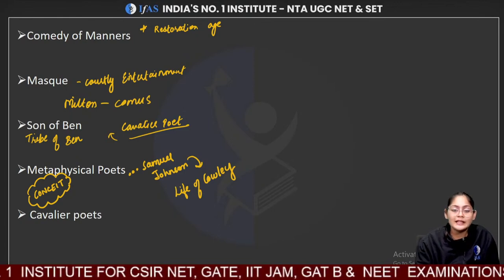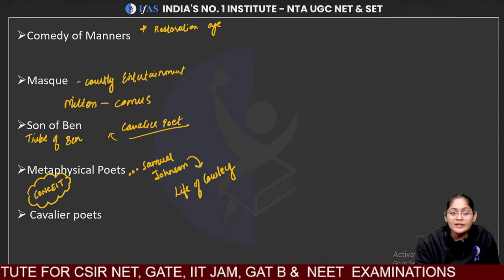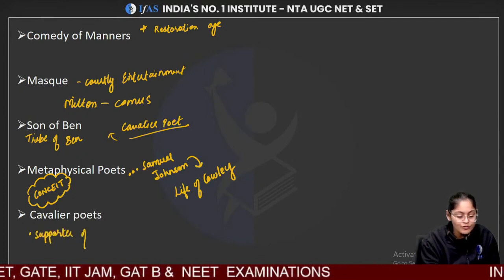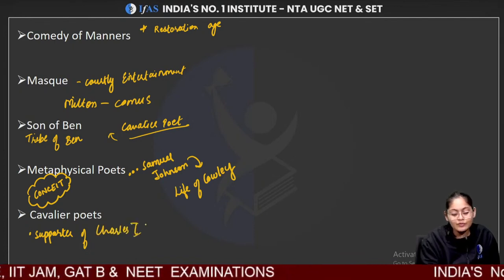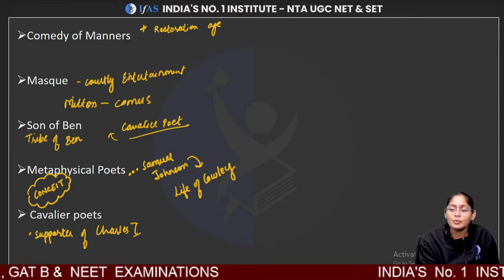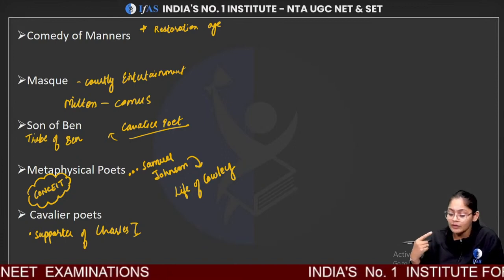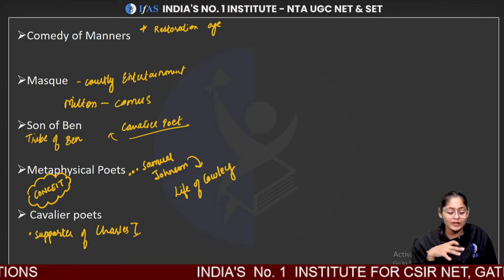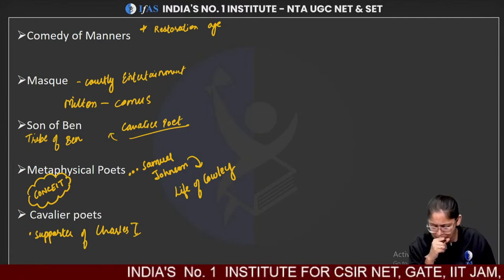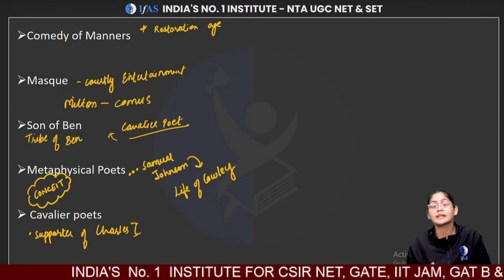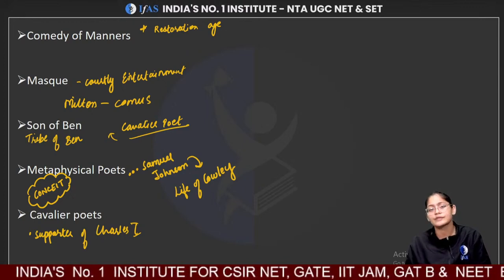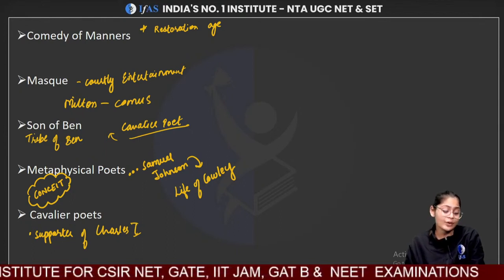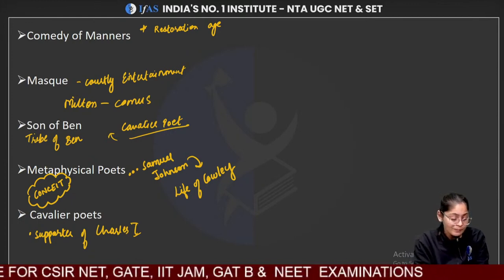Cavalier poets were poets who supported Charles I. Their themes were very different — far from religious and spiritual themes; they were more into pleasure, eroticism, and cultural life. Important Cavalier poets include Richard Lovelace, John Suckling, Robert Herrick, Thomas Carew, and William D'Avenant. Some members of the Tribe of Ben are also included among Cavalier poets.